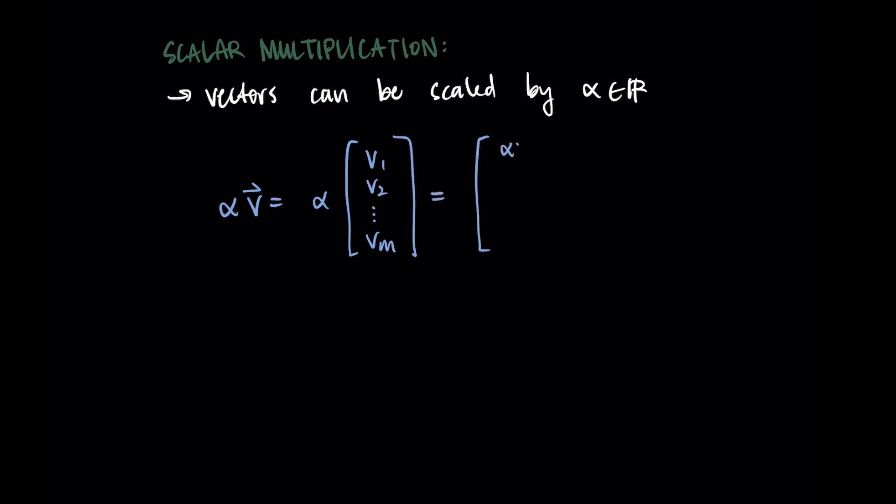We're going to see something similar for scalar multiplication. So we can take a vector and scale it by some value alpha, which is a real number. So when we take that vector and scale it by alpha, we do alpha times V. Then we would write alpha times that column vector, which then gets distributed. So the alpha gets distributed to each element. So we have alpha V1, alpha V2, all the way through alpha Vm. And so this works as you would expect. We just distribute alpha to each element as we would in component form.